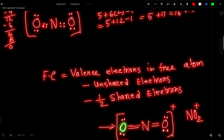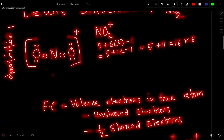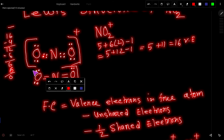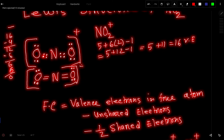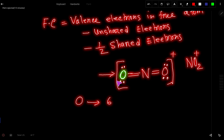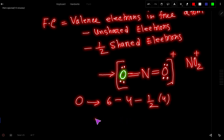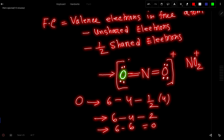We can express bond pairs as dashes — two bond pairs means two dashes. For this oxygen: valence electrons equal six, minus unshared electrons which is four, minus half of shared electrons. The shared electrons here are four (one double bond = four electrons), so half of four is two. Six minus four minus two equals zero. So the formal charge of this oxygen is zero, and since both oxygens are in the same electronic environment, both have a formal charge of zero.